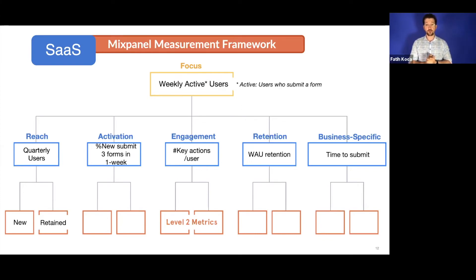Next metric is engagement. We want more weekly active users and we want them to engage more, to do more key actions. Here, number of key actions per user, number of form submissions per user at weekly level could be a good engagement metric. Retention is straightforward. We want users. We want them back next week. So what percent of the users come back next week and become an active user again?